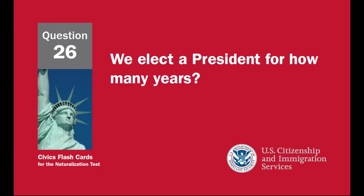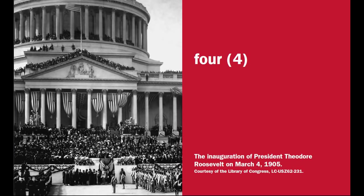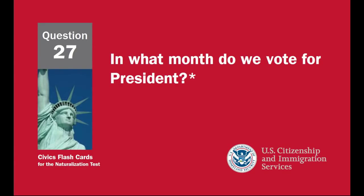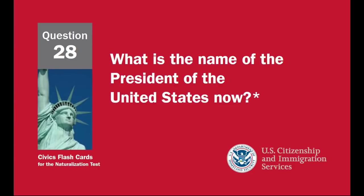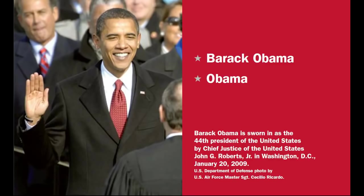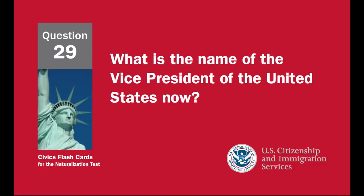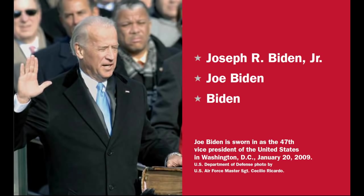We elect a president for how many years? Four. In what month do we vote for president? November. What is the name of the president of the United States now? Barack Obama. What is the name of the vice president of the United States now? Joseph R. Biden Jr., Joe Biden.